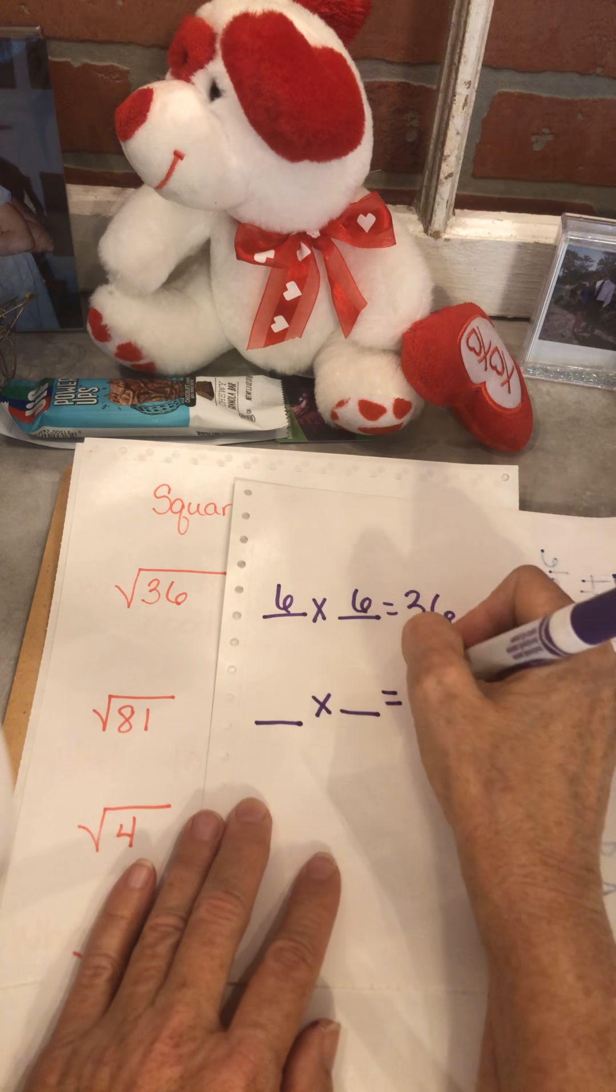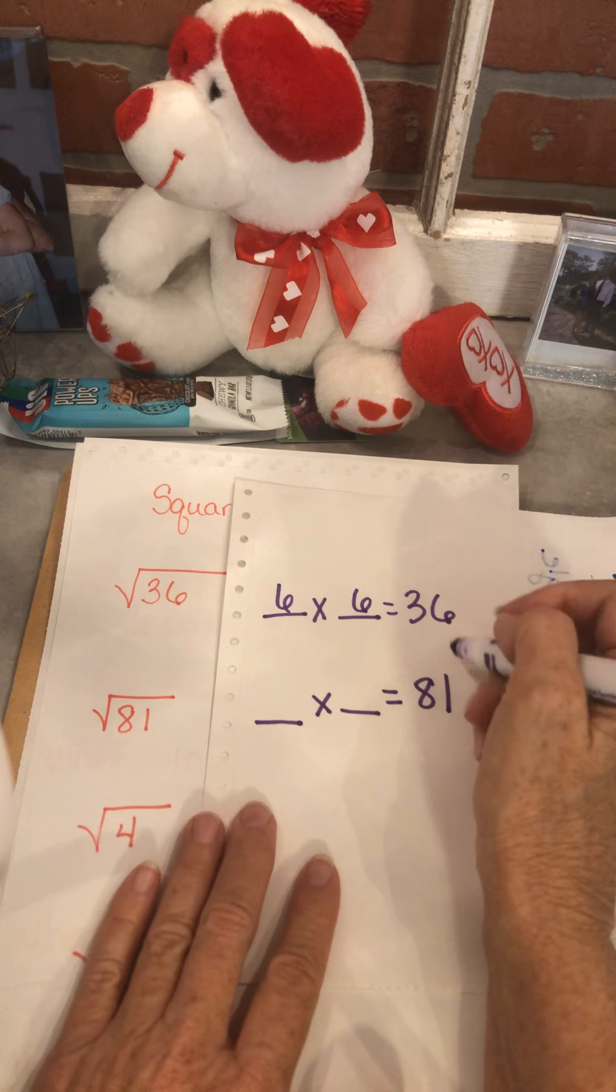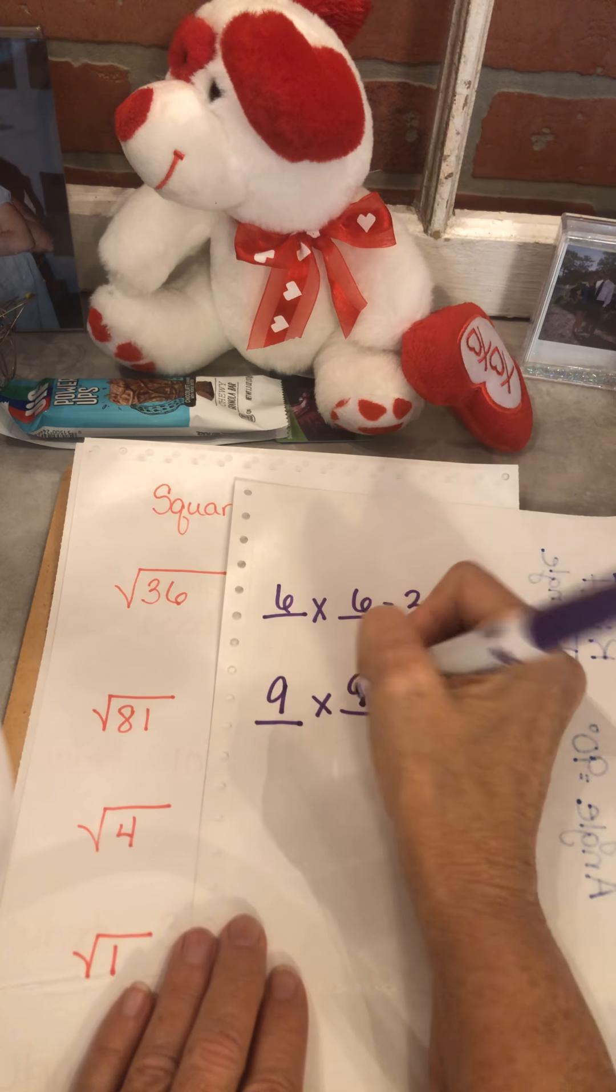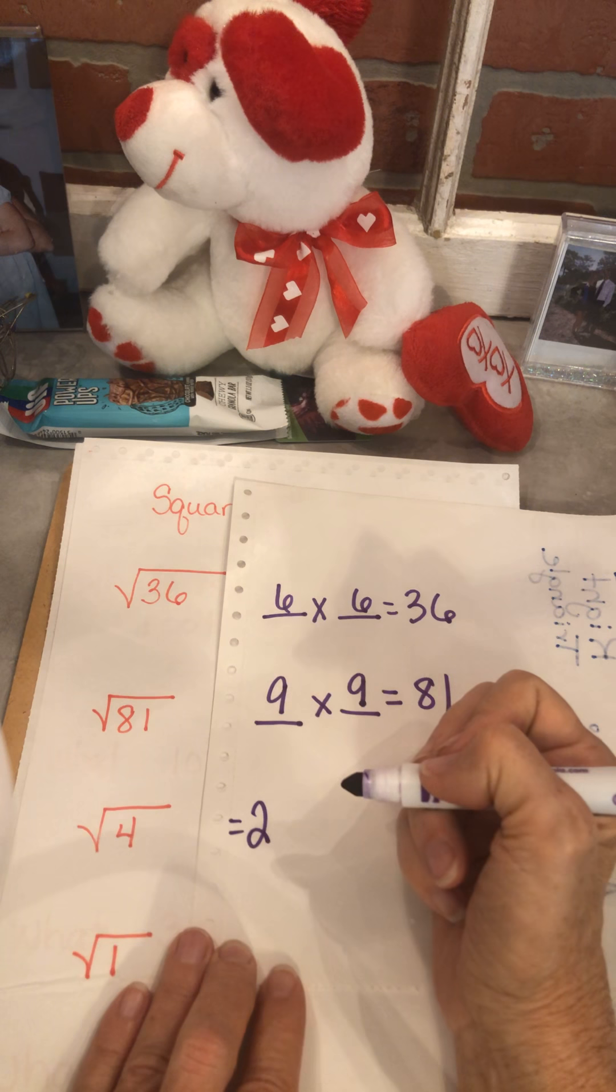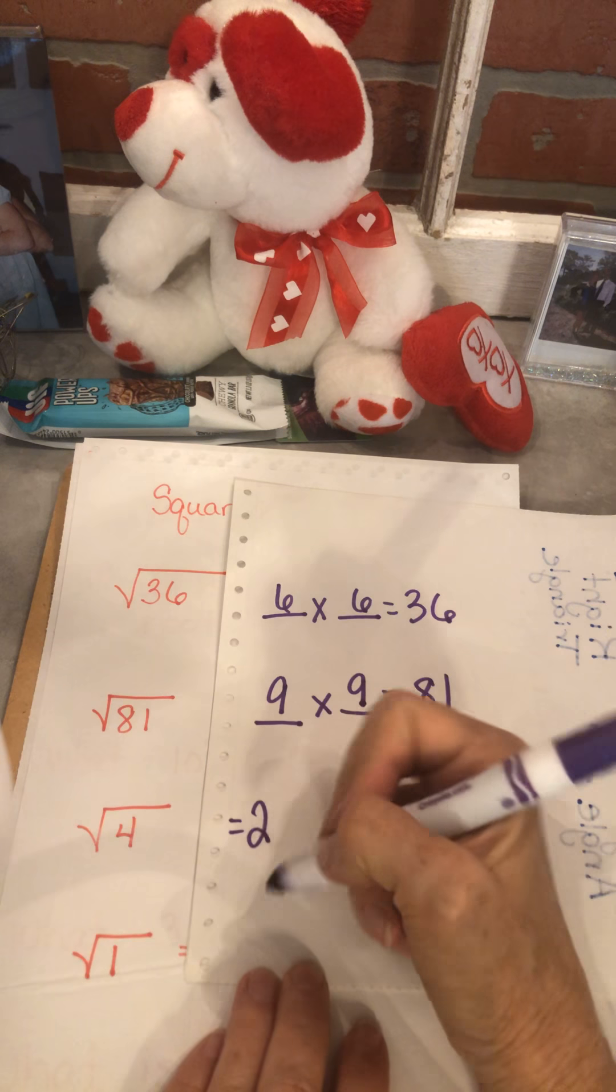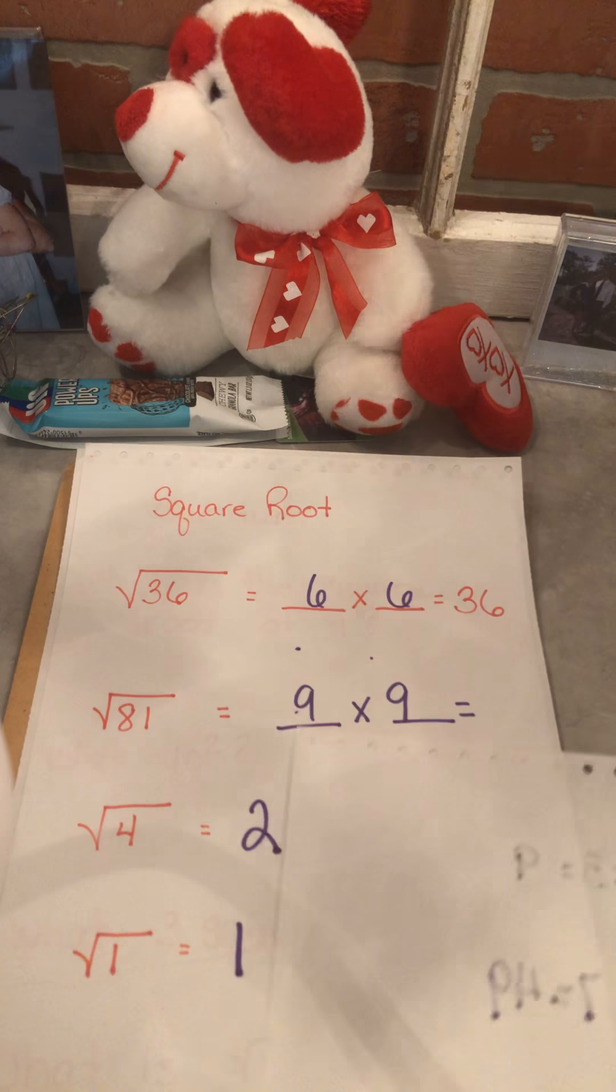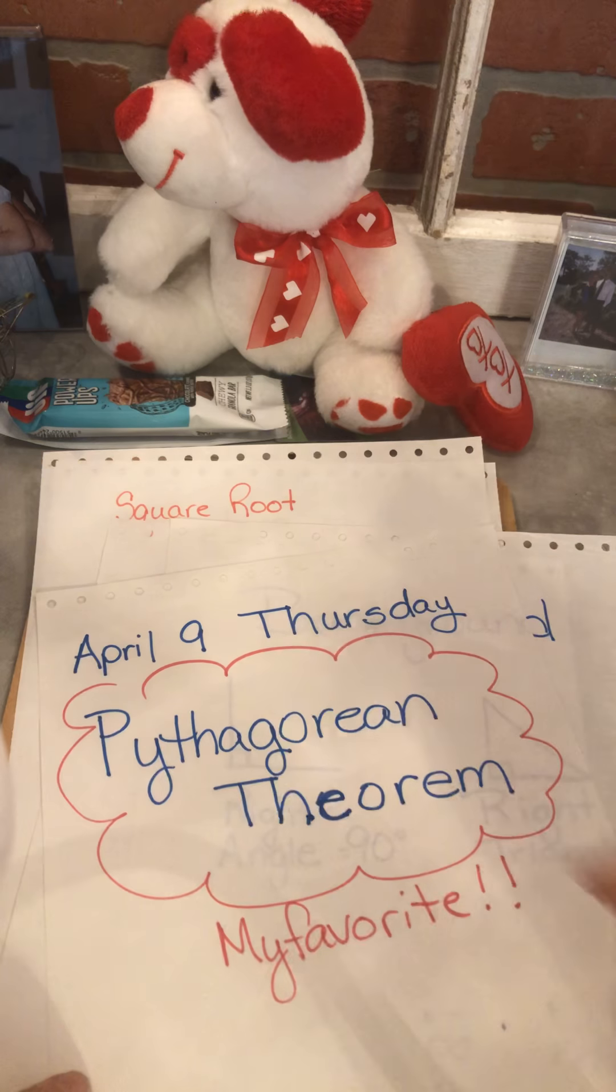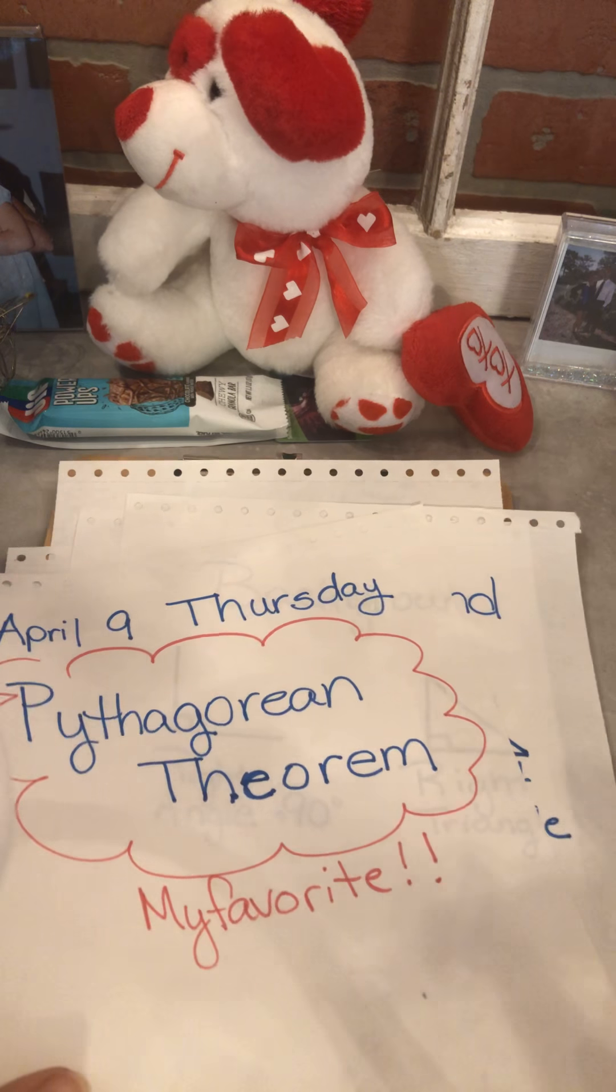What times what gives me 81 where the numbers are exactly the same? Nine times nine. What times what gives me four where the numbers are the same? The answer is two. And what times what gives me one? I hope you got that right, it's one. All right, so that's a little background.